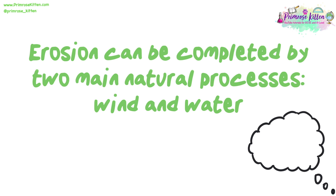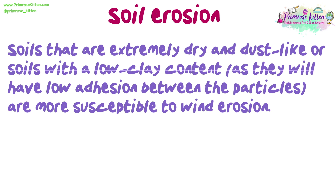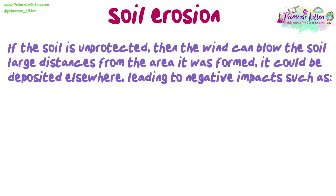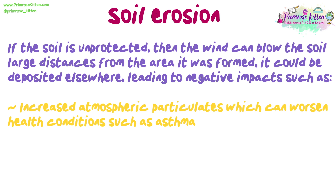Erosion can be completed by two main natural processes: wind and water. Soils that are extremely dry and dust-like, or soils with a low clay content and therefore low adhesion between particles, are more susceptible to wind erosion. Higher wind velocities will erode at a greater rate. If the soil is unprotected, the wind can blow soil large distances from the area it was formed, and it could be deposited elsewhere, leading to negative impacts such as increased atmospheric particulates which can worsen health conditions such as asthma.